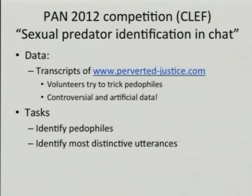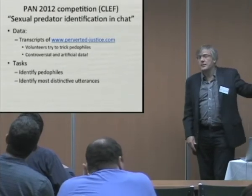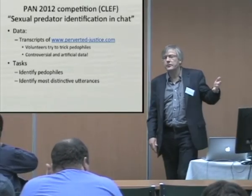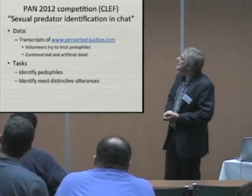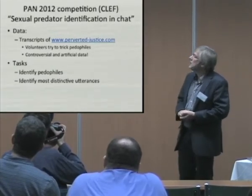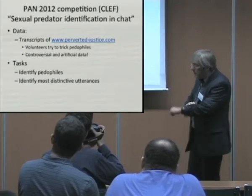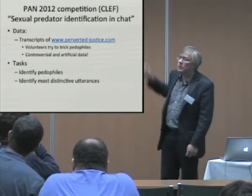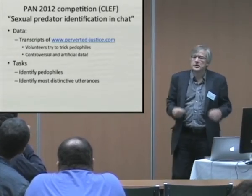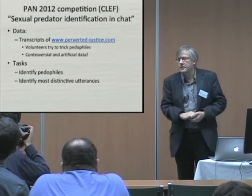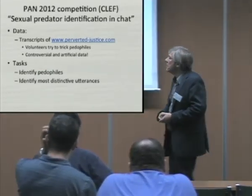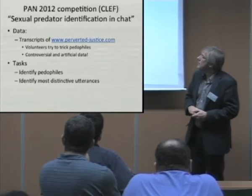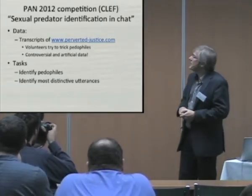But there is a competition — the week after next there's a conference in Rome about this problem. You can even get data from the internet to train your own pedophile detection system. It's called the sexual predator identification in chat competition. The transcripts are taken from a website called Perverted Justice, where American volunteers try to trick pedophiles into a conversation by acting as if they are children. It's controversial data and probably not really reliable because it's artificial.